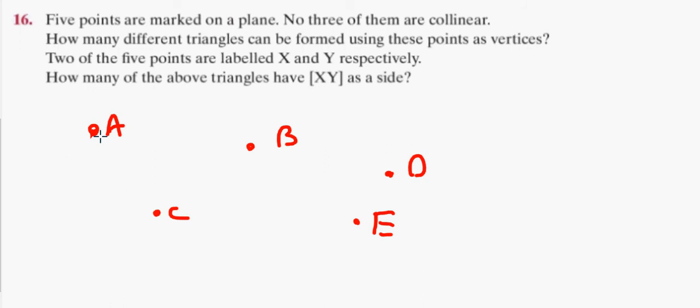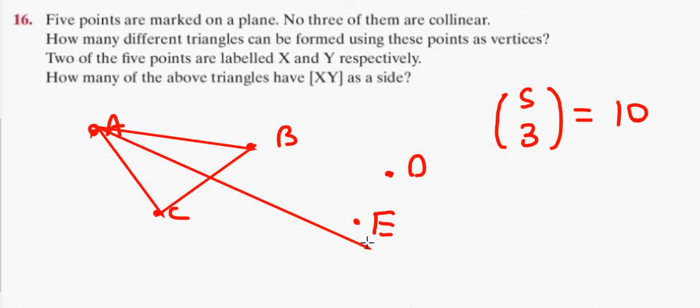So, how many different triangles can be formed using these points as vertices? Well, to make a triangle, you need to choose three corners. So that, to me, would mean five corners to choose from, choose three, which would be ten different triangles. So that would be a triangle. That would be a triangle. And apparently, I can make ten of them, which I'm not going to do because it'll hurt my head.